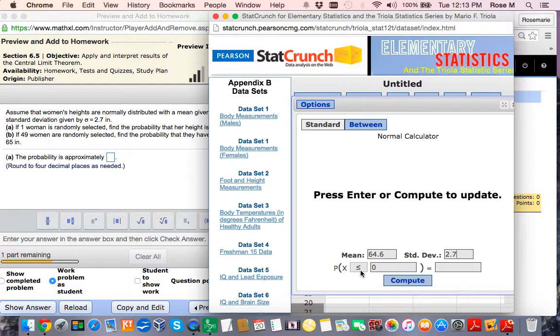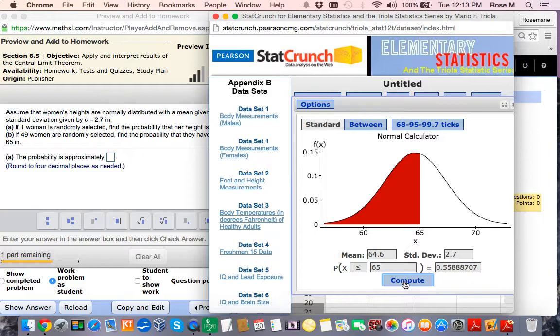Now since we're asked the probability that someone is randomly selected has a height less than, we're going to leave it on less than or equal to here, and we're going to type in 65. We hit Compute, and there's our answer.